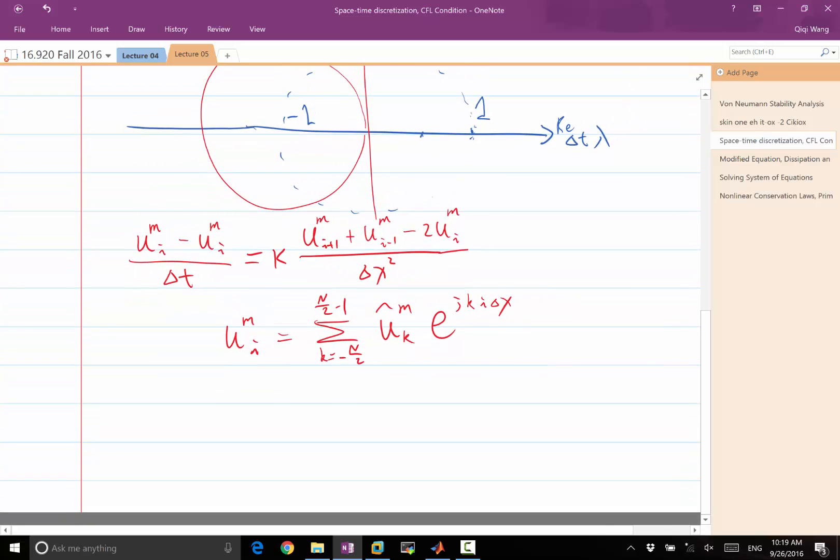When we plug this in, the time derivative or the discrete time derivative is only applied here. So after doing the same thing we did before, we get u hat of m plus 1 minus u hat of m k divided by delta t.